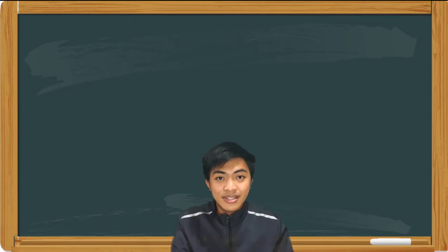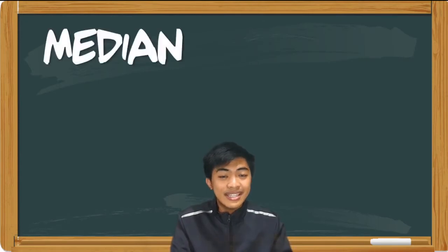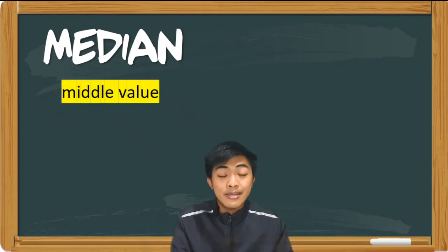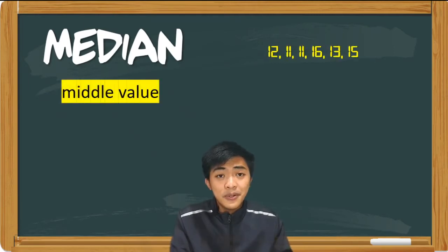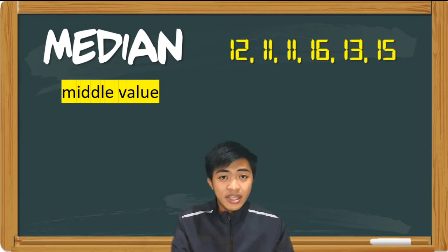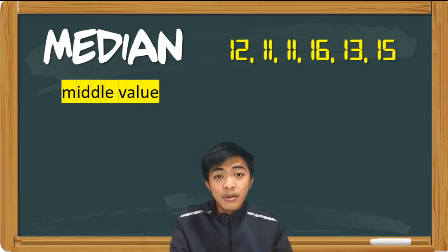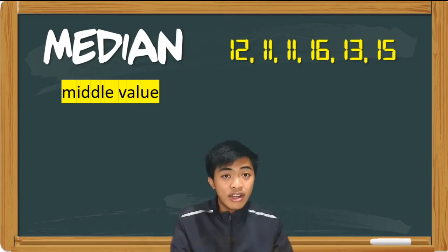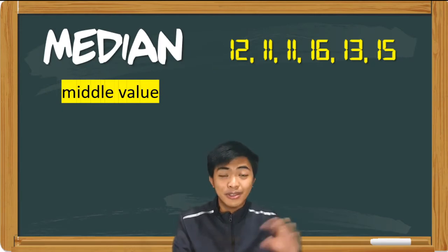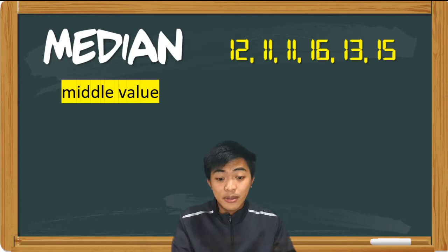Let's proceed to the next measure of central tendency, which is the median. Median, on the other hand, is the middle value of the dataset. Suppose we are given this dataset. We don't simply get the middle value dyan sa ating dataset na yan. We have to arrange it first in ascending or descending order. So mas gusto ko i-arrange ko na lang siya from lowest to highest — that is in ascending order.